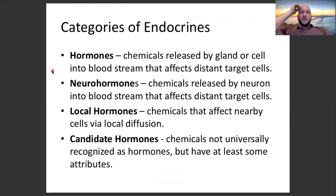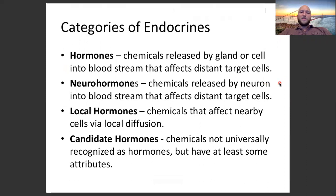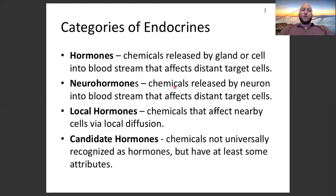Key definitions: A hormone is a chemical released by a gland or cell into the bloodstream that affects a distant target cell. A neurohormone is the same, but made by a neuron. Local hormones are chemicals that affect nearby cells via diffusion. Candidate hormones are not universally recognized as hormones but have at least some of the attributes.